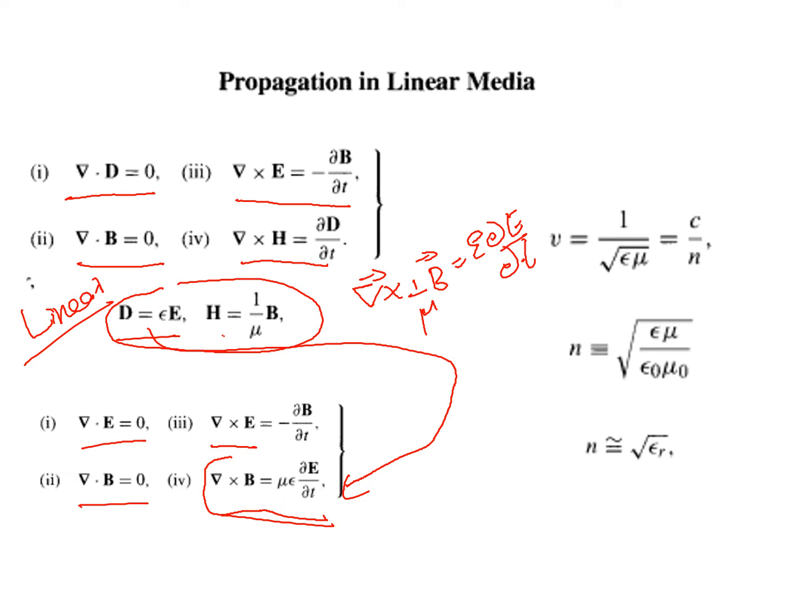So, what is a linear medium? We can relate H and B with H equal to 1 by mu times B. If one parameter is known, you can find the other. A homogeneous medium is one where epsilon and mu — permittivity and permeability — do not vary from point to point and are constant throughout the medium. For a linear homogeneous medium, the Maxwell's equations are del dot E equal to 0, del dot B equal to 0, del cross E equal to minus dou B by dou t, and del cross B equal to mu epsilon times dou E by dou t. For free space or vacuum, we use mu 0 and epsilon 0.